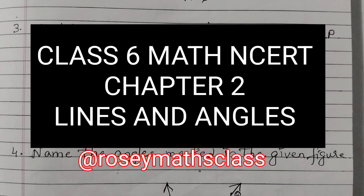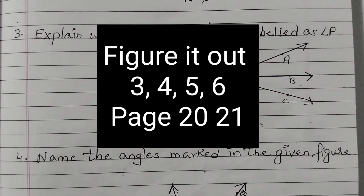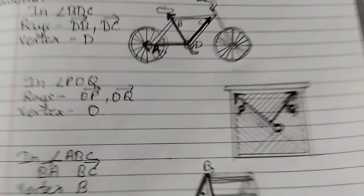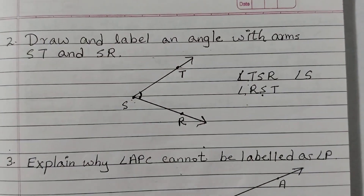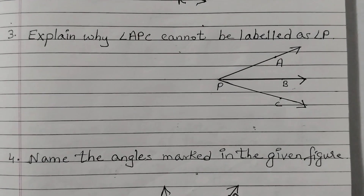Hello students, welcome back to Rosie Maths class. In this video we are going to solve questions number 3, 4, 5, and 6 from the figure it out section given on page number 19. It starts from page 19, then 20, and the last question is on page 21. We have already completed question number 1 and question number 2. Now we are going to do question number 3.